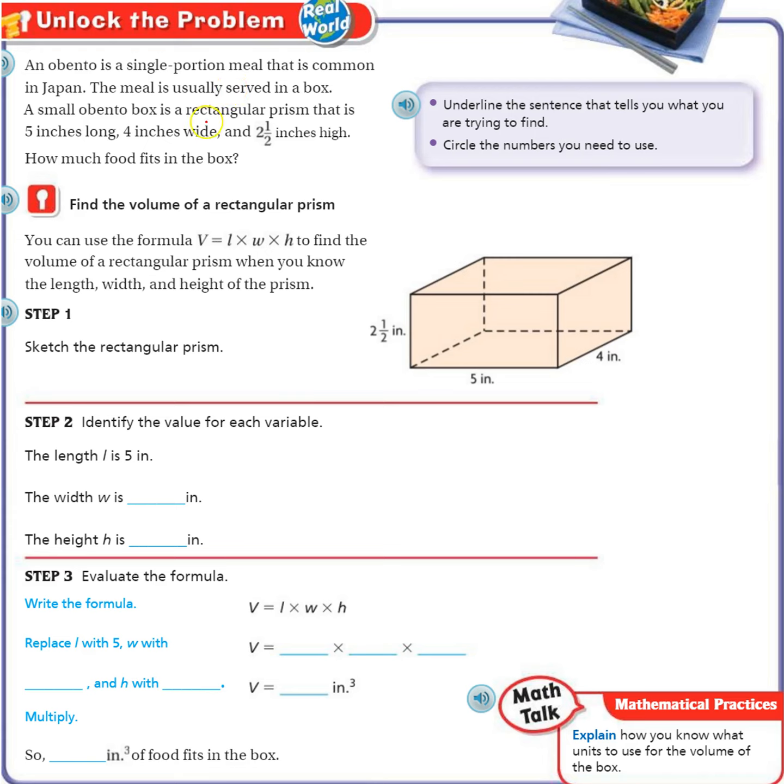A small Obento box is a rectangular prism that is 5 inches long, 4 inches wide, and 2.5 inches high. How much food fits in the box?